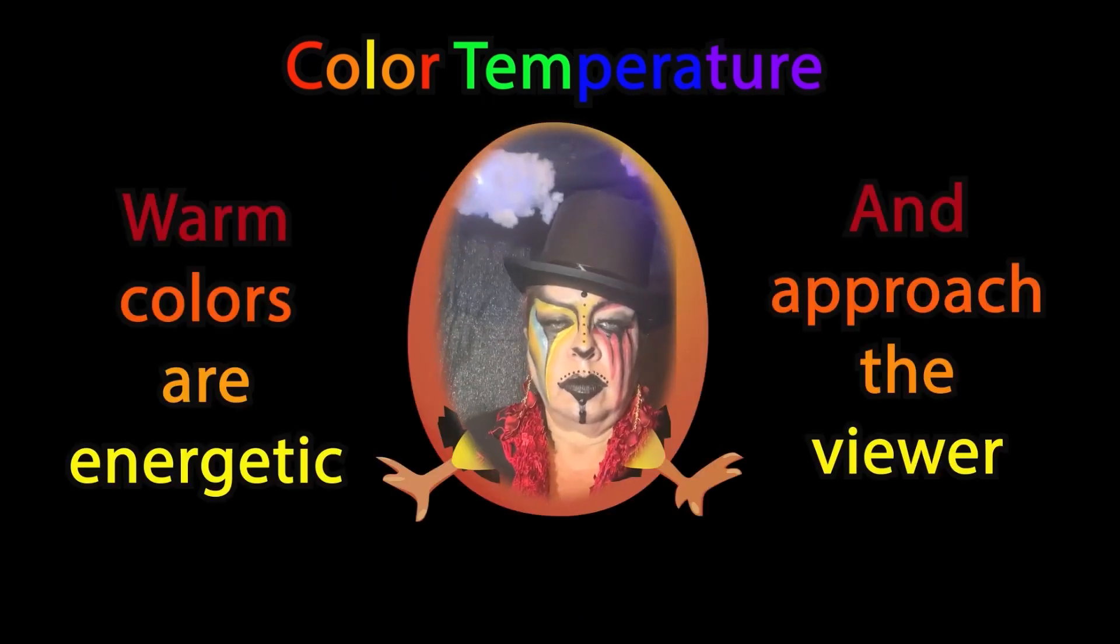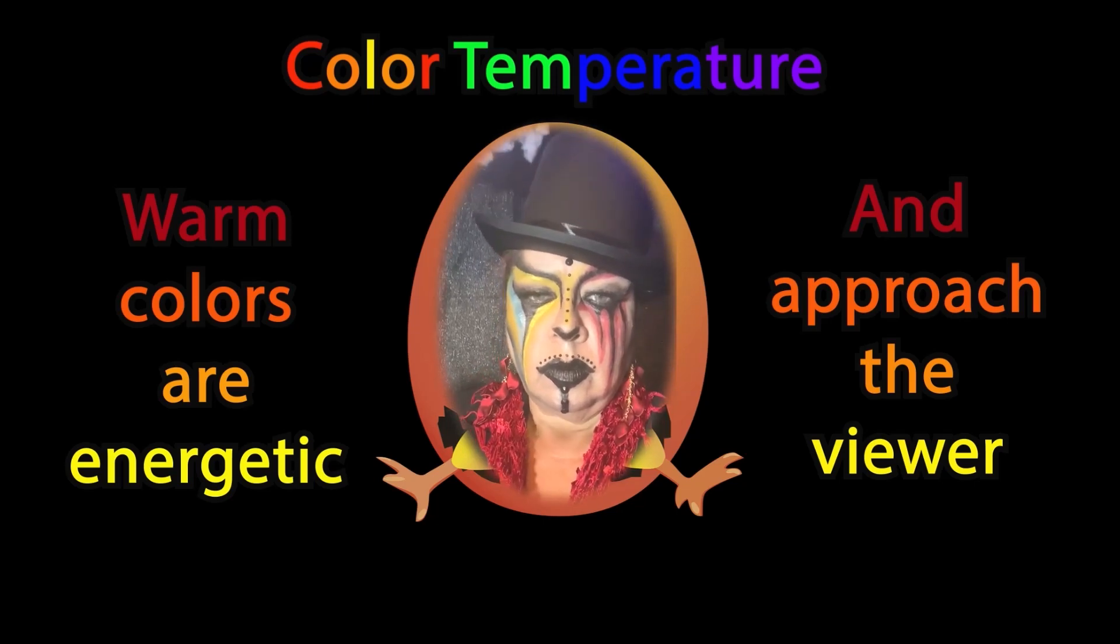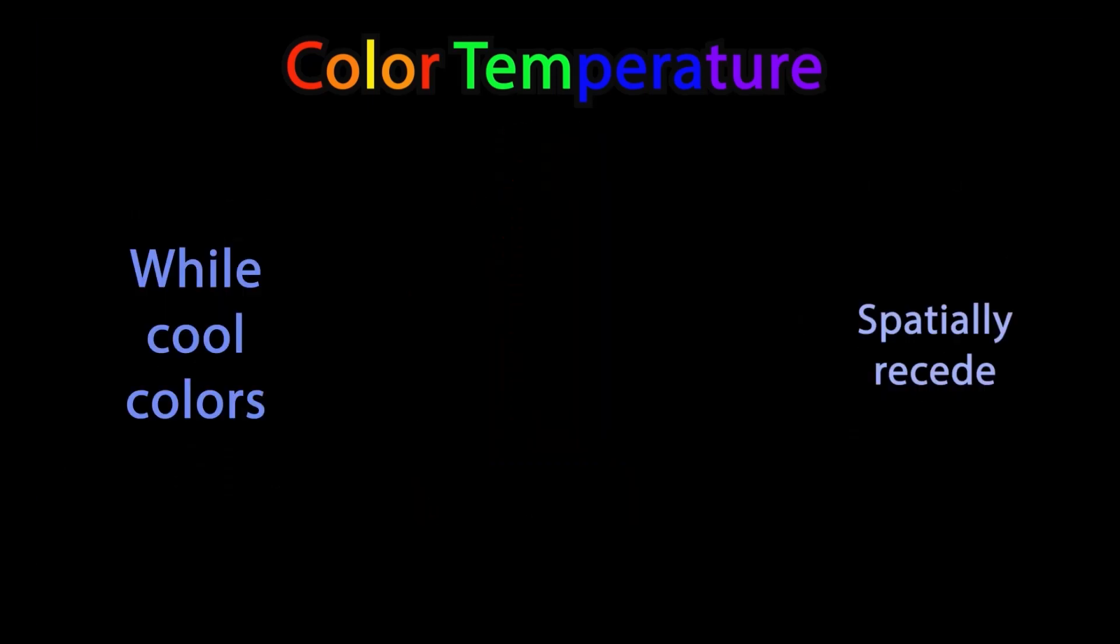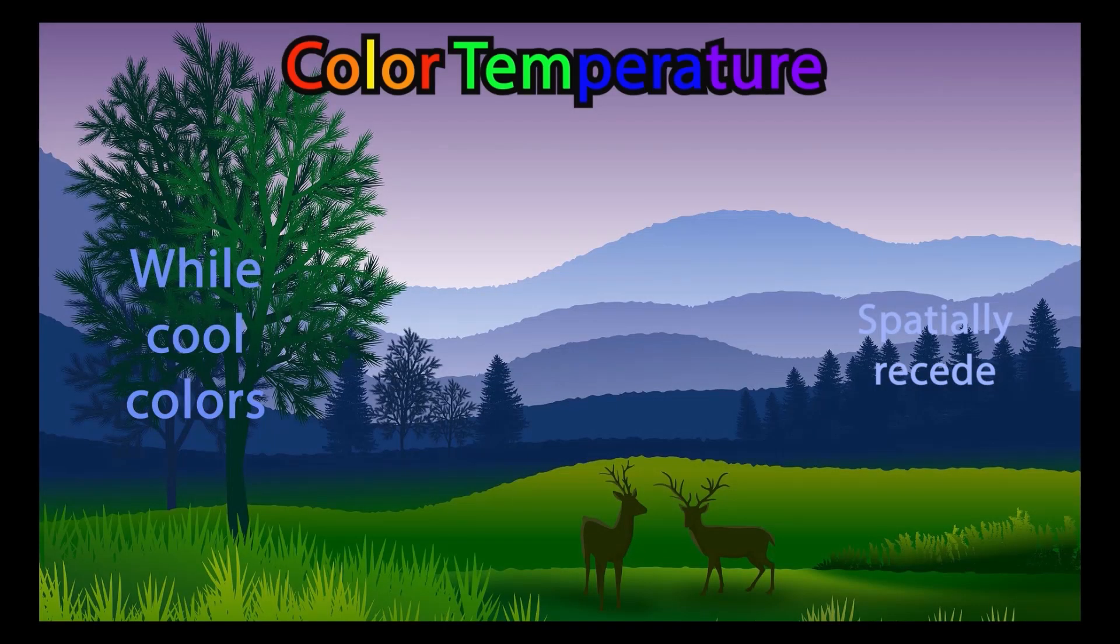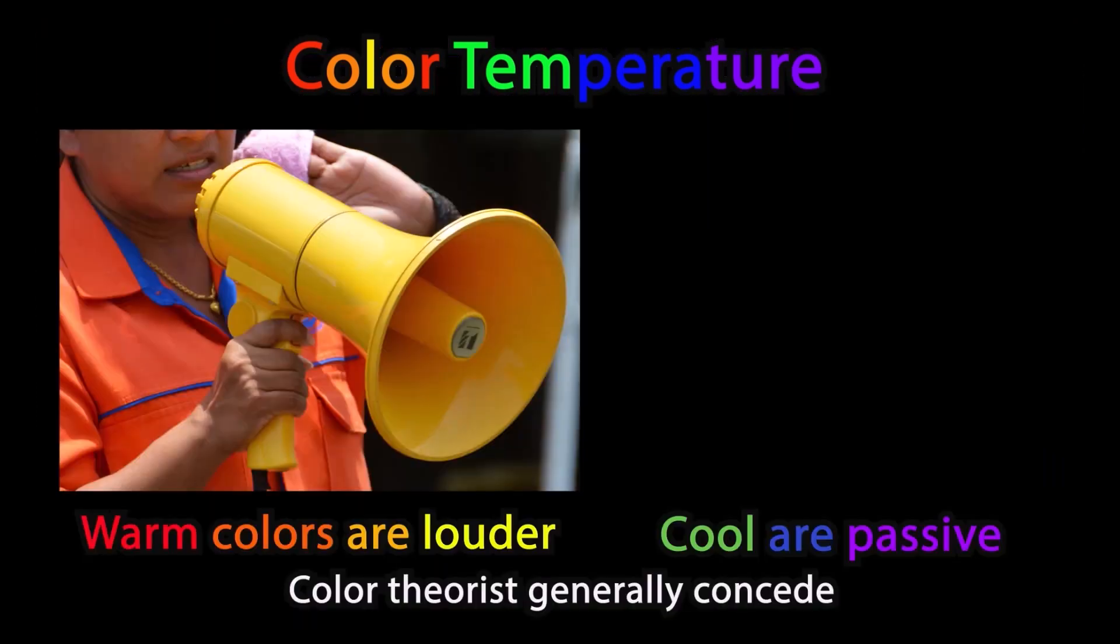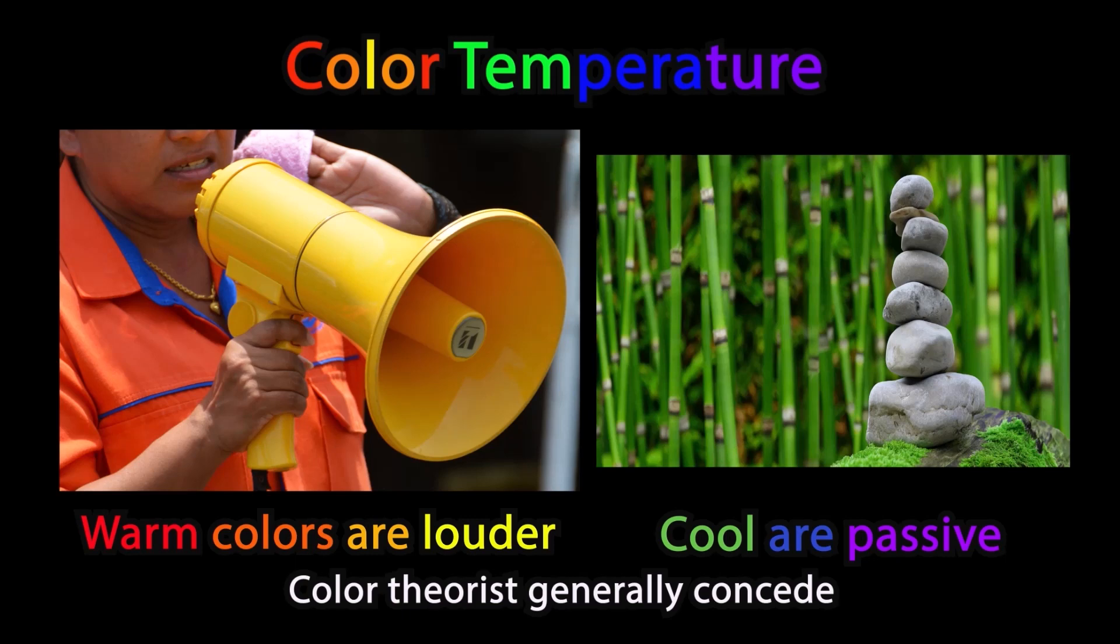Warm colors are energetic and approach the viewer, while cool colors spatially recede. Warm colors louder, cooler passive. Color theorists generally concede.